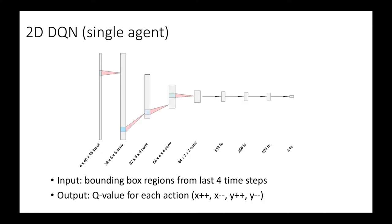Here is the diagram for the deep Q-network of the 2D single agent model. The input is the bounding box regions from the previous four time steps, meaning the input is an image with four channels where each channel comes from a previous time step. The output is the Q-value for each possible action. Since it's 2D, there are four possible actions and therefore four Q-values output by the DQN.